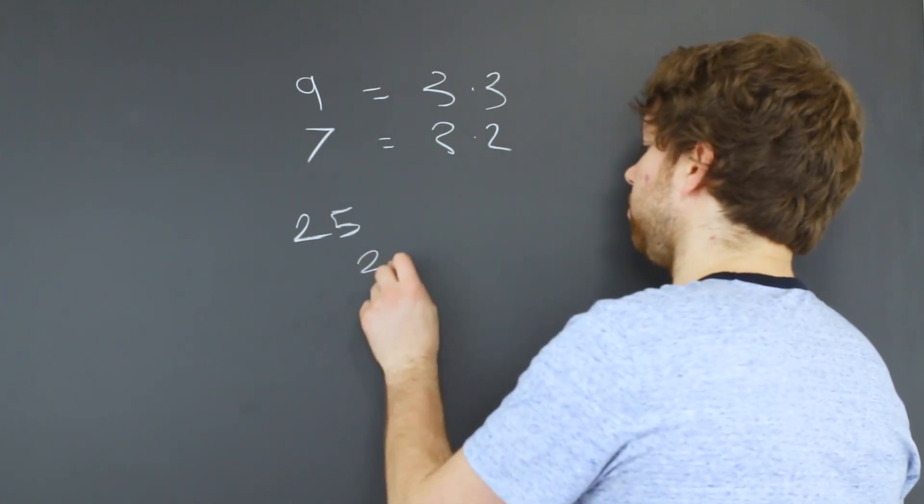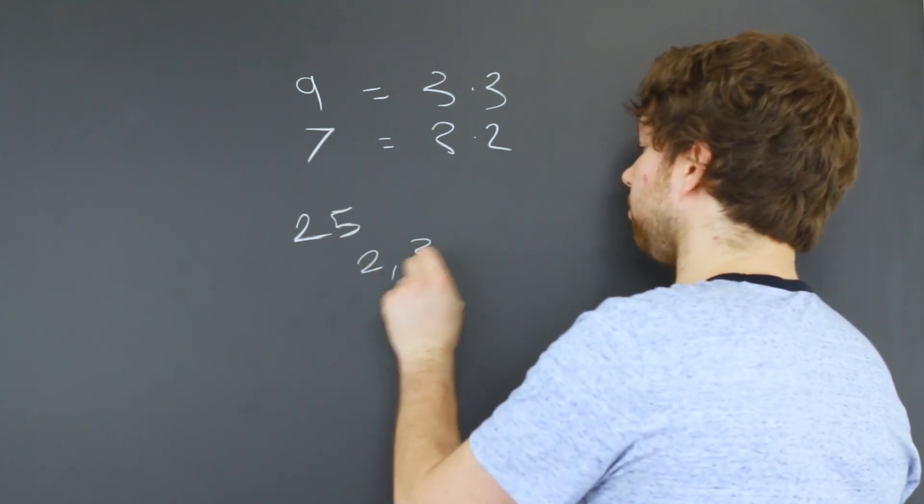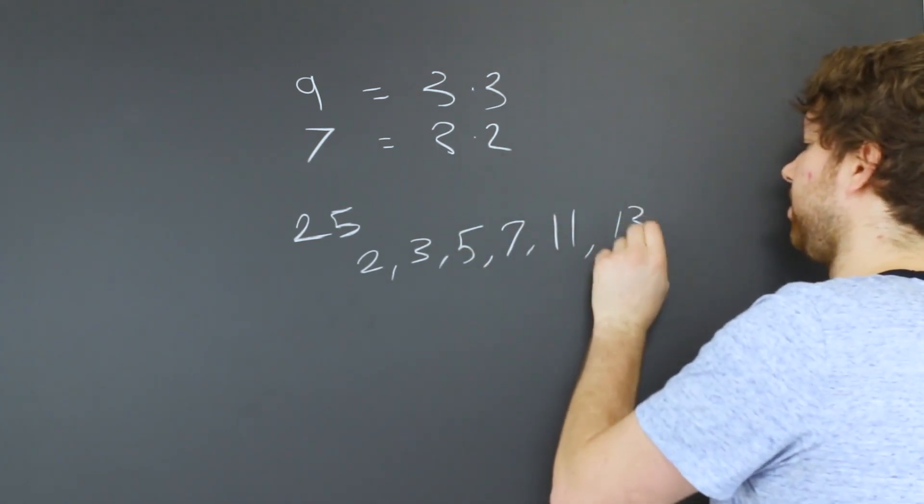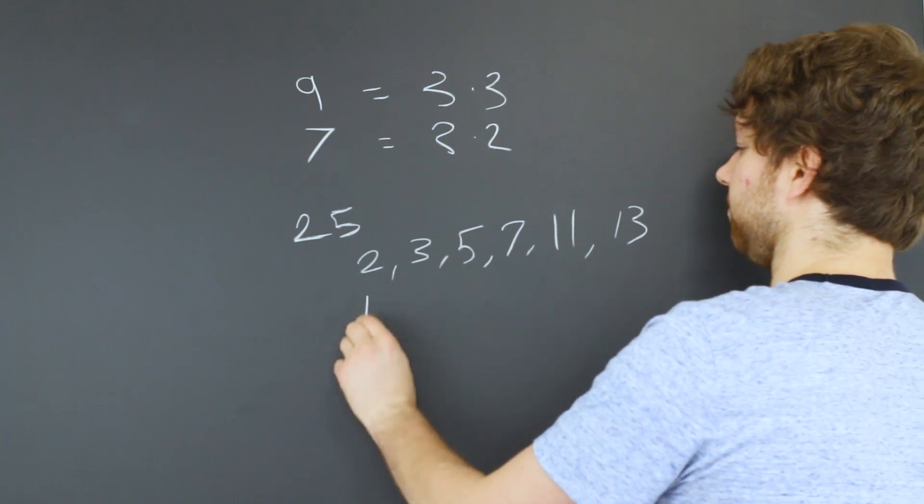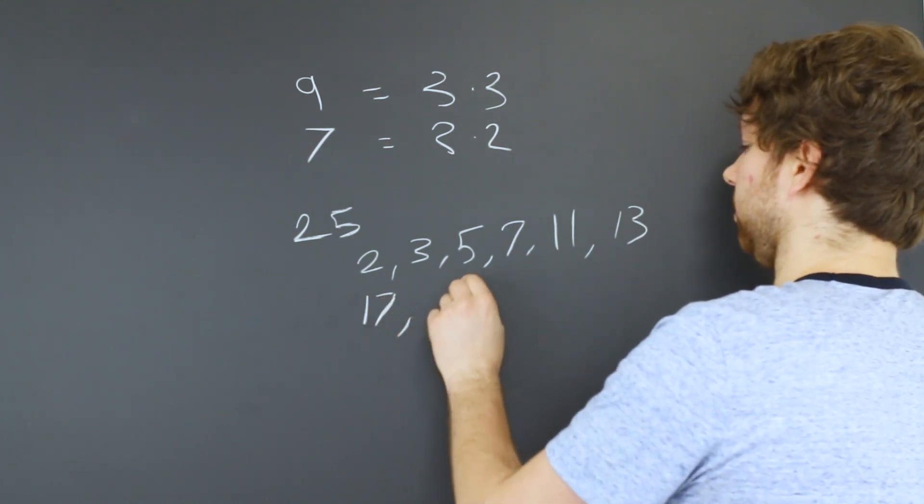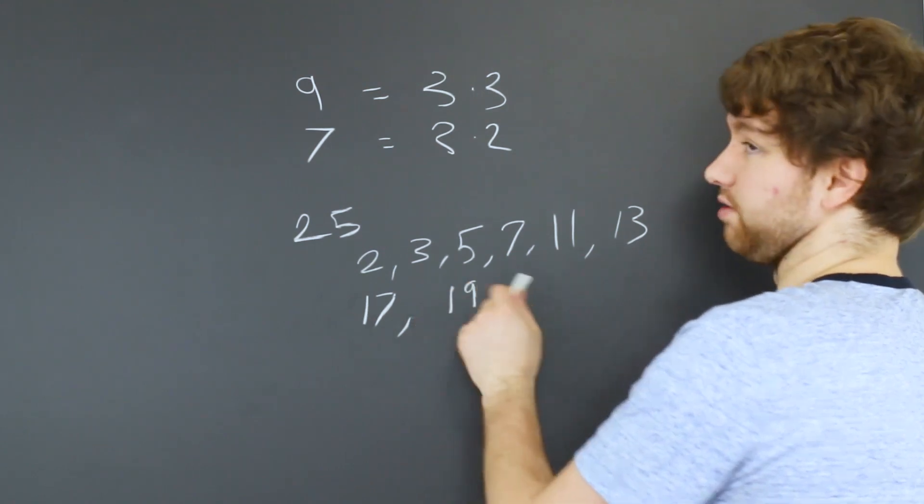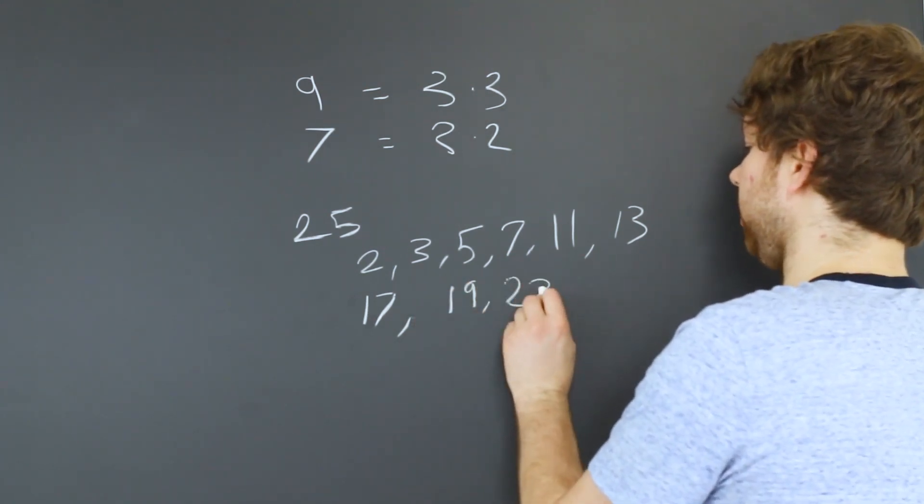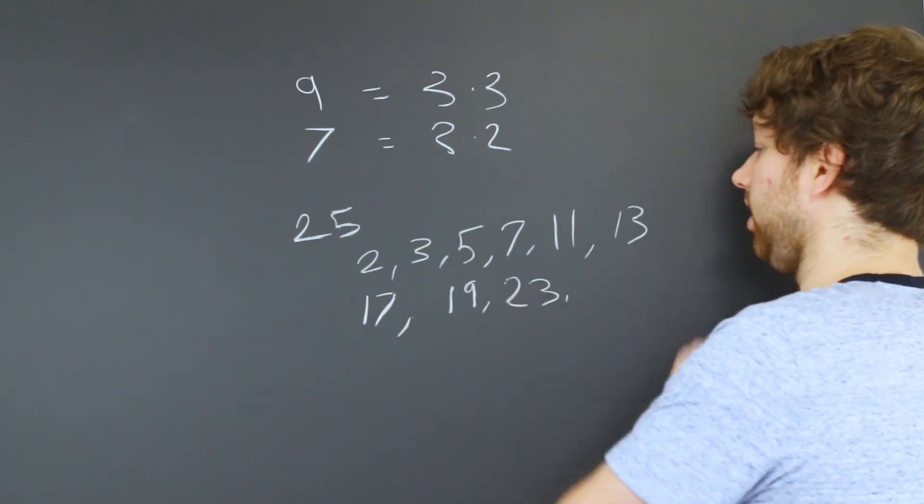So counting upward, that would be 2, 3, 5, 7, 11, 13, 17, 19, I'm probably screwing something up here, 23. And yeah, that's it.